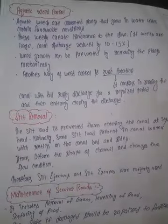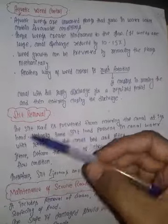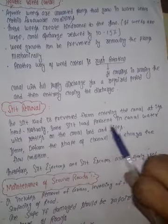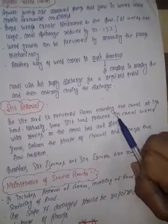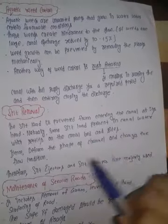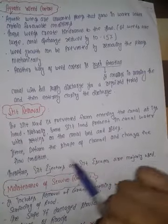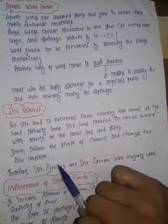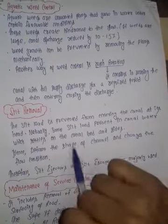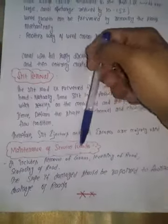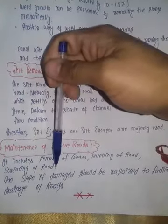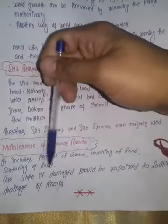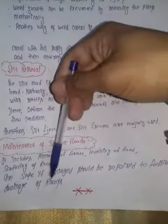For silt removal, the silt load is prevented from entering the canal at its head. Some silt load naturally present in the canal water settles on the canal bed and sides, deforming the shape of the channel and changing the flow conditions. Silt ejectors and silt escapes are mainly used for the silt removal process. Maintenance of the service road includes removal of grass, leveling and surfacing of the road, and repairing slopes if damaged to facilitate proper drainage.